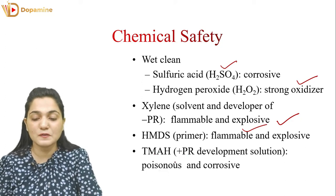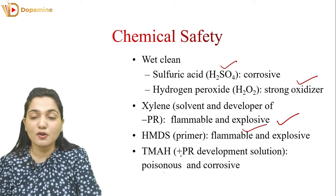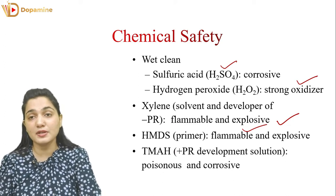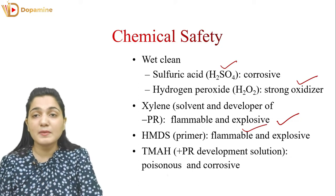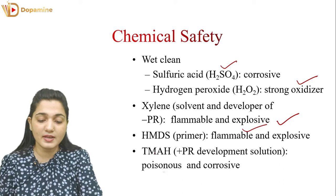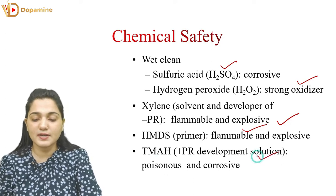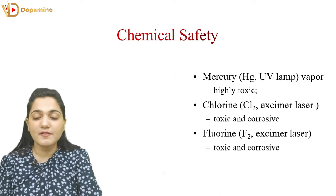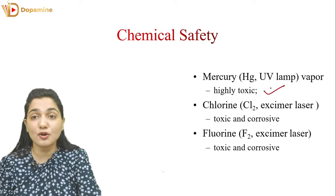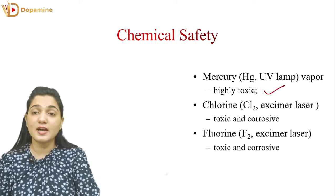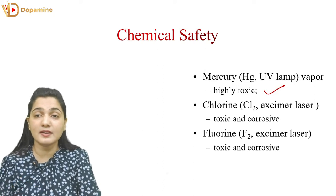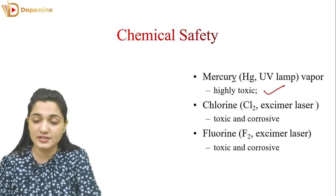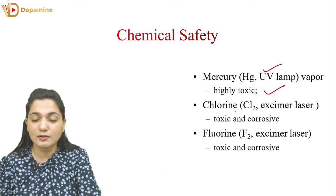All these chemicals are either explosive, corrosive, poisonous, or strong oxidizers, so if we don't handle them carefully they can harm human life. TMAH, which is the positive photoresist developer solution, is also poisonous and corrosive and should be handled with care. Mercury vapors are highly toxic — even a very small amount can be fatal. Chlorine from excimer lasers is toxic and corrosive, and fluorine from excimer lasers is also toxic and corrosive.